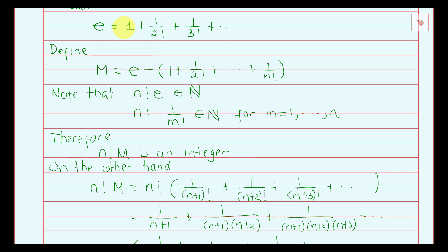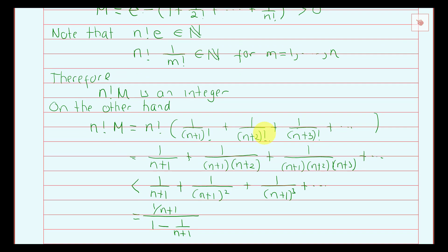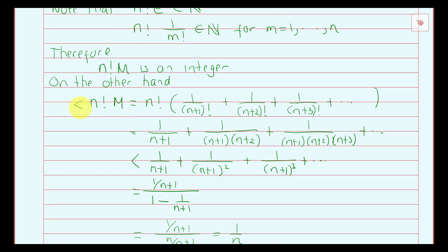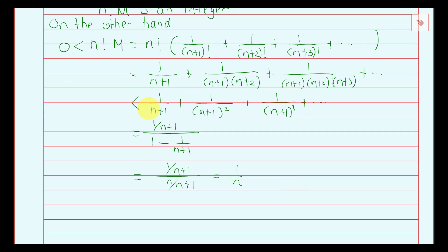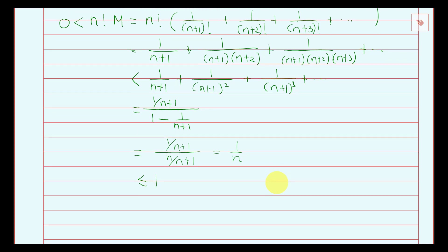Since e is bigger than this partial sum expression, we know that m is positive, and therefore n factorial times m is also positive. But we already showed that n factorial times m is an integer, so n factorial times m is a positive integer which is strictly smaller than 1 over n, and since n is a positive integer, this is less than or equal to 1. That is a contradiction.